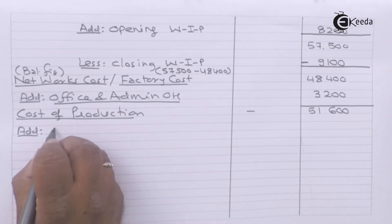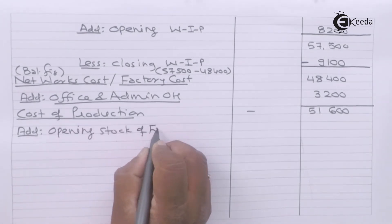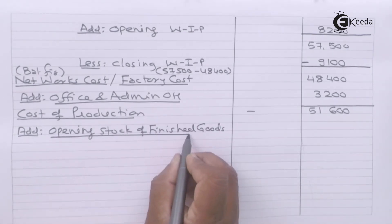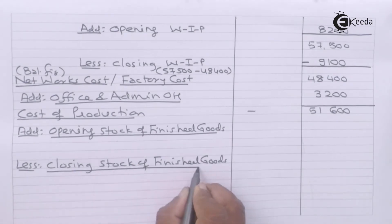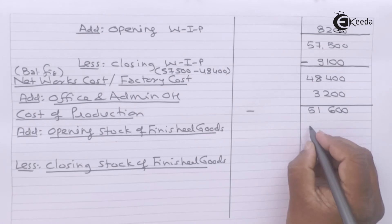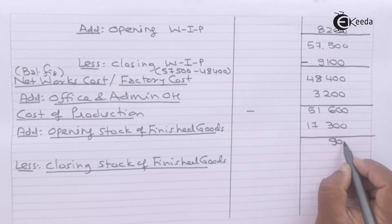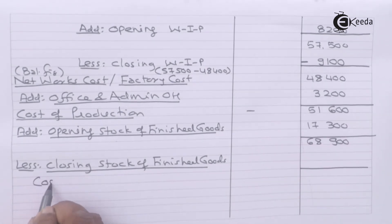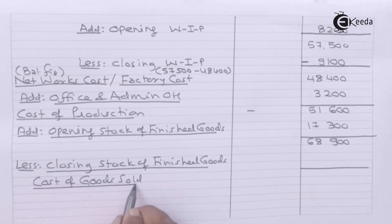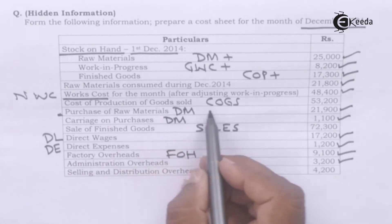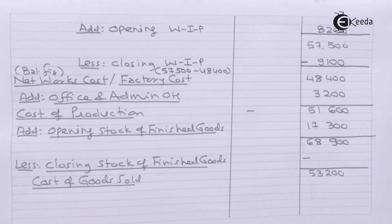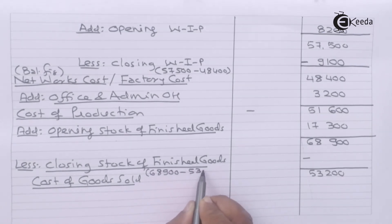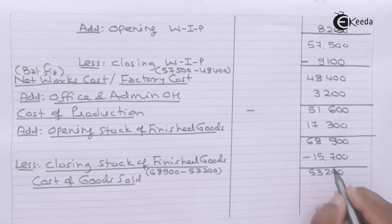To this we have to add opening stock of finished goods, which is given as 17,300. We subtract closing stock of finished goods to arrive at cost of goods sold. Cost of production of goods sold is given as 53,200. So closing stock of finished goods is obtained as the balancing figure: 15,700.